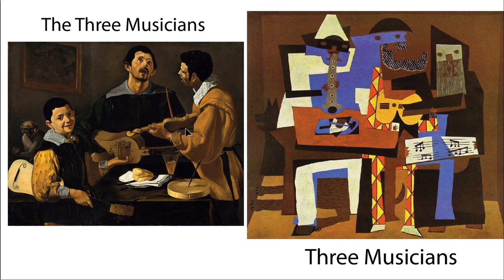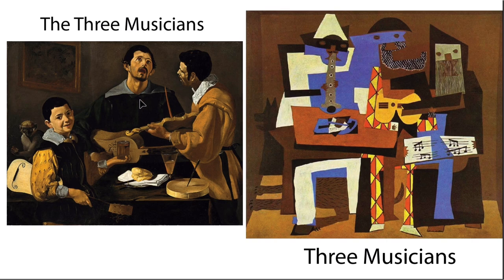We can find several similarities right away. We see three musical instruments — I can see two, but there's a violin here and a guitar in this one, so two string instruments. They're also sitting at a table, probably at a restaurant. We see the corner of the room for one-point perspective in both. We see three men in each, and there's a dog hiding in this one and a monkey in this one — so both have an animal.